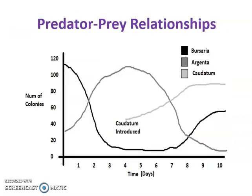Our last topic is predator-prey relationships, which have been going on historically for a long time. This first graph is called a competition curve. Depending on what species are present, it's not just one versus the other — other impacts exist. Here you're seeing bacteria: Bersaria and Argenta are competing, and Argenta is winning. When a third bacterium, caudanumus, is introduced, it becomes the top competitor — Argenta goes down and Bersaria is able to do better. So it's not just predator versus prey; other species also influence a population.